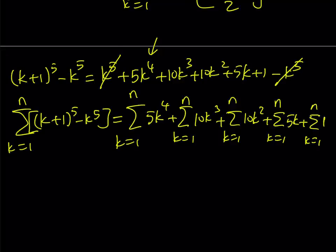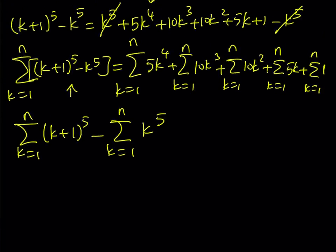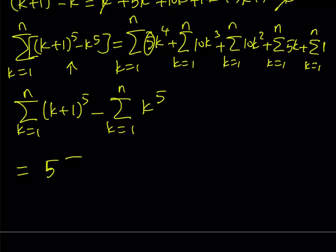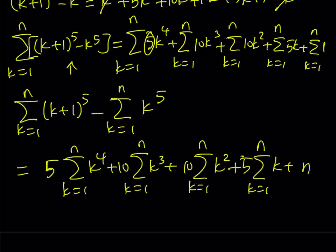Now I'd like to separate these expressions and factor out the coefficients. On the right-hand side, I get 5 times the sum from k equals 1 to n of k to the 4th power, plus 10 times the sum of the cubes, plus 10 times the sum of the squares, plus 5 times the sum from 1 through n, and finally plus n.